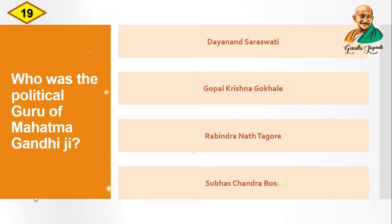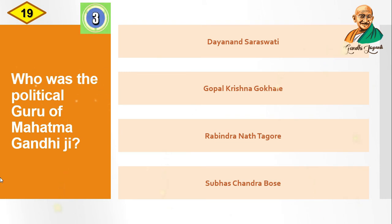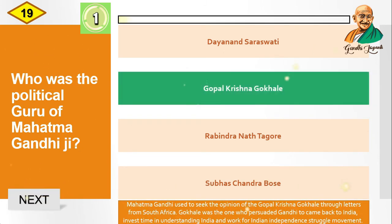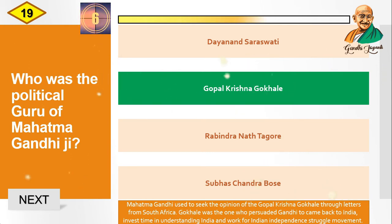Question: Who was the political guru of Mahatma Gandhi? Options are: Dayanand Saraswati, Gopal Krishna Gokhale, Rabindranath Tagore, Subhas Chandra Bose. The correct answer is Gopal Krishna Gokhale. Mahatma Gandhi used to seek the opinion of Gopal Krishna Gokhale through letters from South Africa.